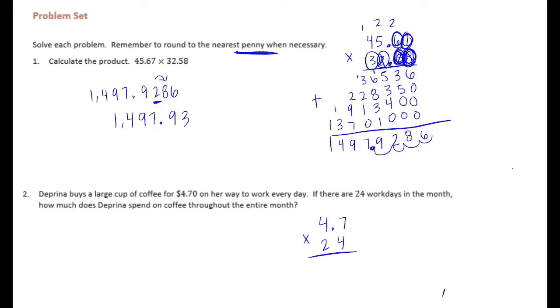Times 24. You can leave it on, it's just more to multiply. 4 times 7 is 28, carry the 2. 4 times 4 is 16 plus 2 is 18. Put our zero down. Done with the 4. 2 times 7 is 14, carry the 1. 2 times 4 is 8 plus 1 is 9. Add it together. 8. 8 plus 4 is 12, carry the 1. 1 plus 1 is 2 plus 9 is 11.